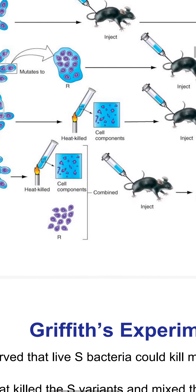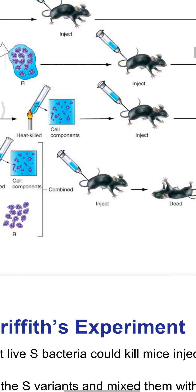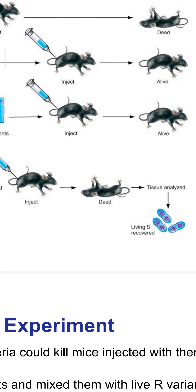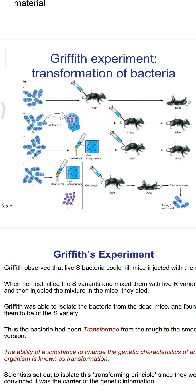Finally, one can notice that when the heat-killed S strain was injected, the mice eventually died because virulence was recovered. This demonstrated transformation in bacteria — the transfer of genetic material from the heat-killed S strain to the live R strain.